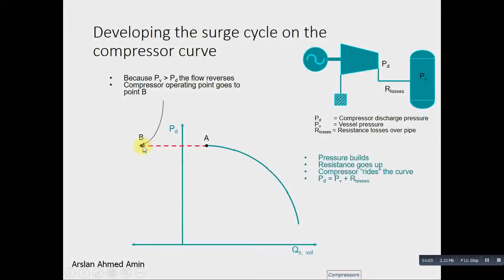Flow is reversed. Please note that the flow is reversed here, its direction is reversed. We know that for forward flow PD should be greater than PV. At the surge point, PV becomes greater than PD. That's why the reverse flow occurs.